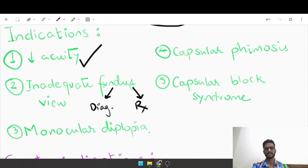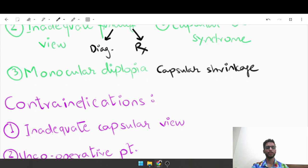Monocular diplopia - this is basically diplopia even after covering one eye. When does this happen? This happens in a condition called capsular shrinkage. When there is uneven proliferation of cells, it produces wrinkling of the capsular surface, which causes movement of the IOL and produces monocular diplopia. The next indication is capsular phimosis, which again resembles shrinkage of the capsule, and the last indication is capsular block syndrome.